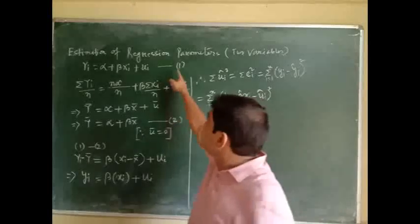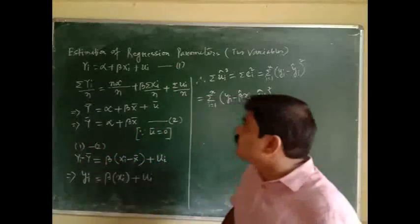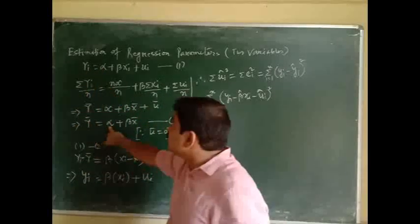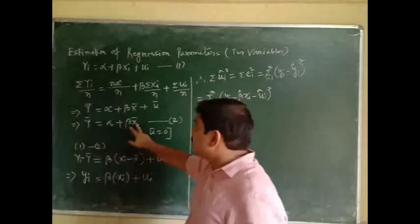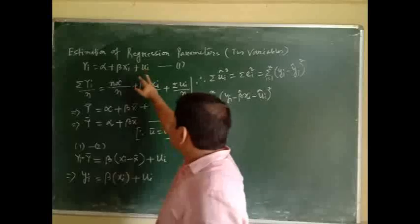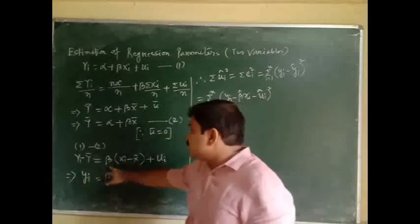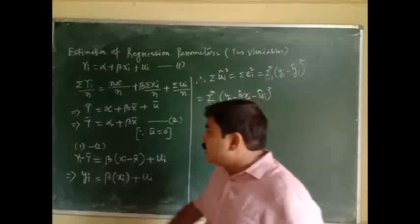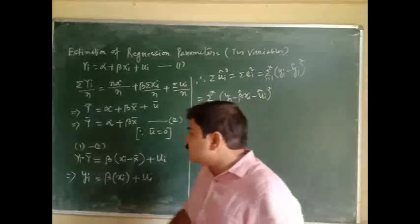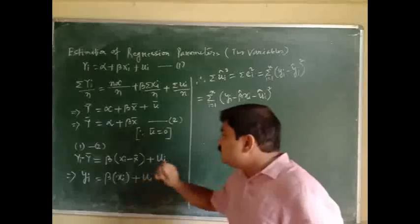That is equation 1. Now subtracting equation 2 from equation 1, we get yi minus y-bar. The alpha terms cancel, leaving beta*xi minus beta*x-bar, which we factor as beta*(xi − x-bar), plus the error term ui. So: yi − y-bar = beta*(xi − x-bar) + ui.